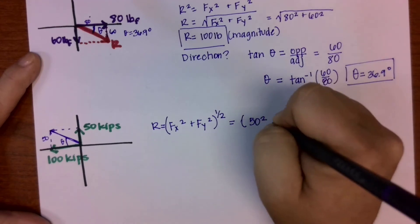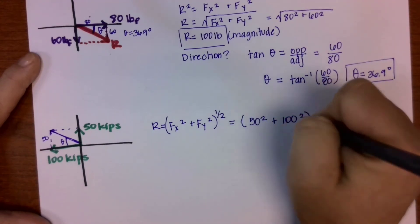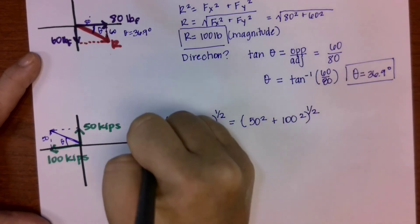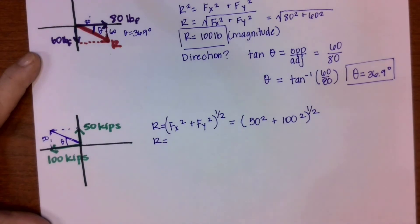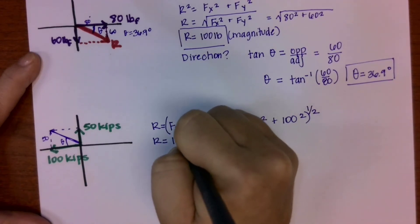So we've got 50 squared plus 100 squared, and then the square root of that whole thing. When I plug that into my calculator, what I get is that the resultant is 111.8 kips.